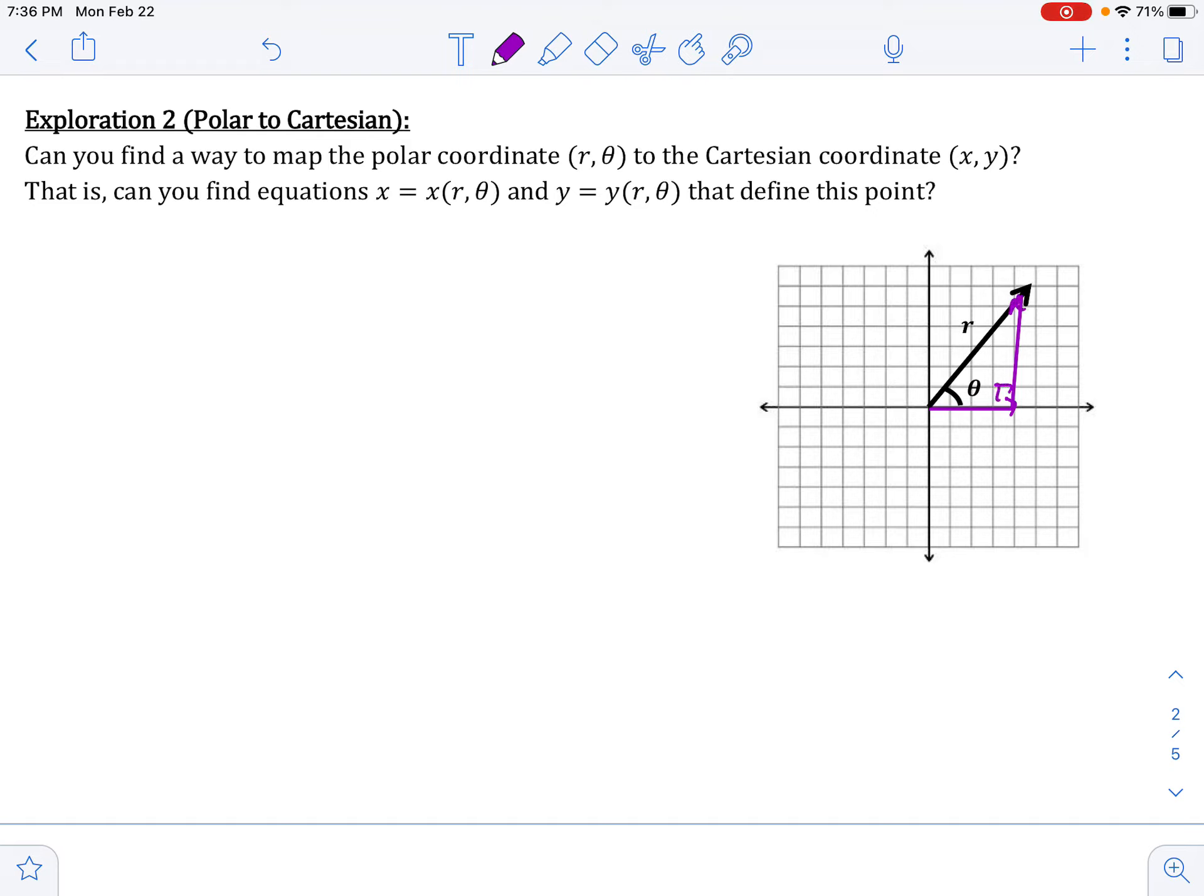And this, of course, is going to be our x. And this is, of course, going to be our y. And of course, how do we find that x component? Well, we know that x would be r times the cosine of theta. And y would simply be r times the sine of theta.